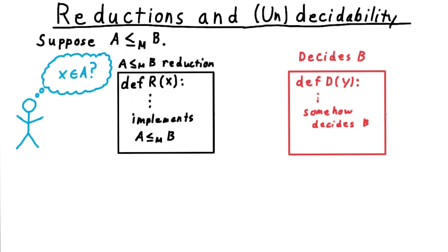I can use the reduction, which is a computable function, remember, that takes in one string and outputs another. I just need to feed in X, and take the output, and feed that into the decider for B. If B accepts, then I know that X is in A, and if B rejects, then I know that it isn't.